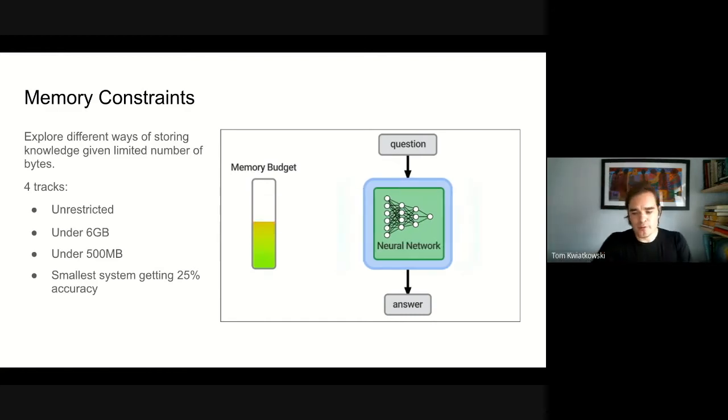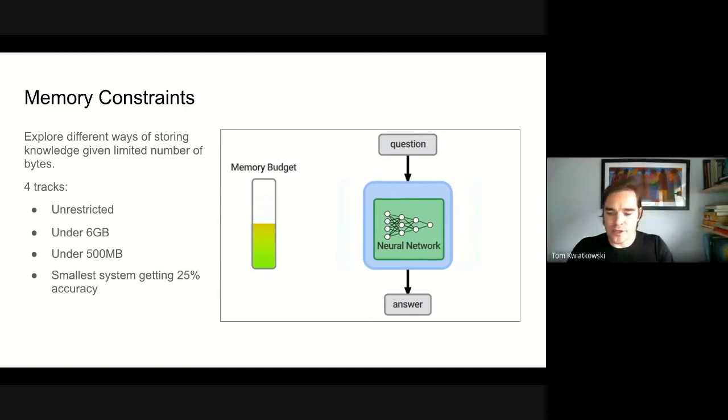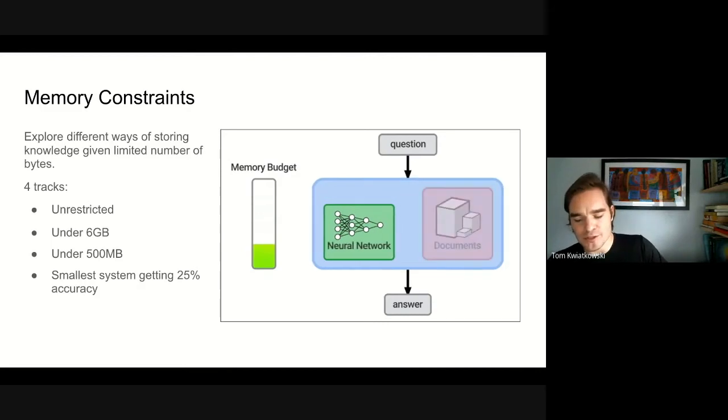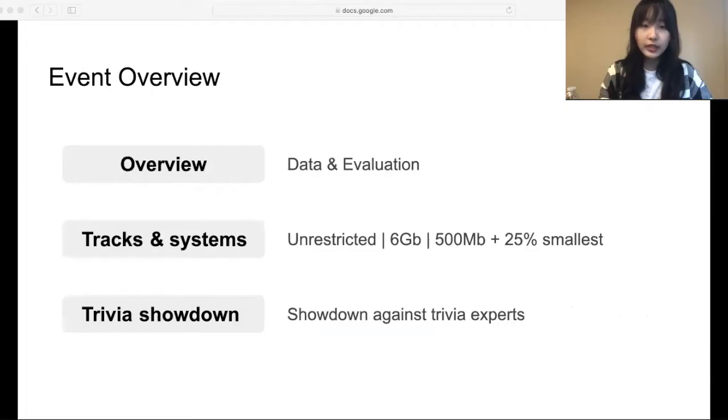So there are four different tracks, and today we're going to see overviews of a diverse range of solutions targeted at each of these very different tracks. Here's an overview of today's event. We will first give a brief overview of the competition, including the data and evaluation. We will then go over each of the tracks and the systems. Finally, we will watch a trivia showdown that shows the competition between the systems and the human team.